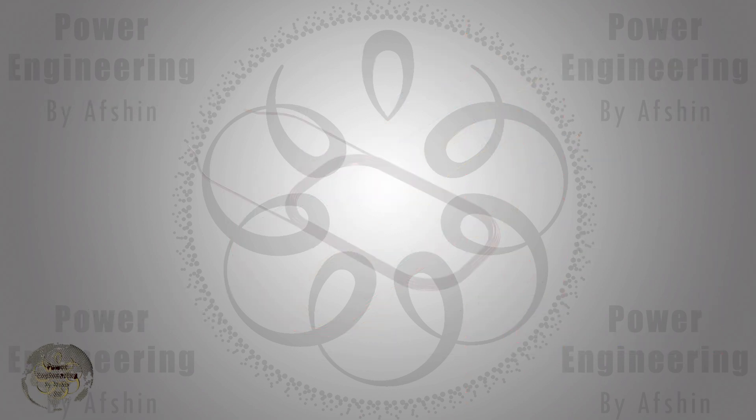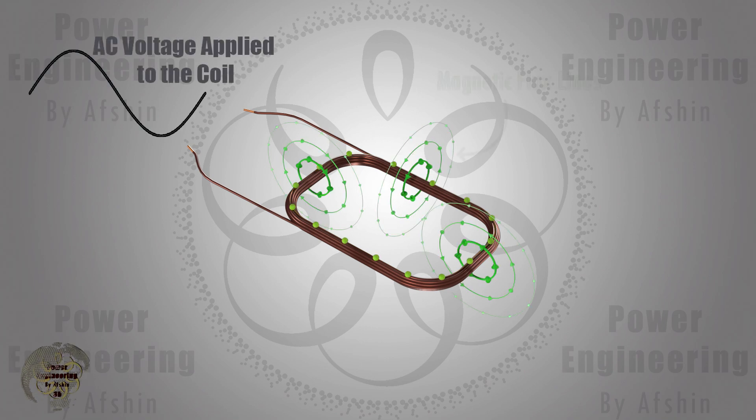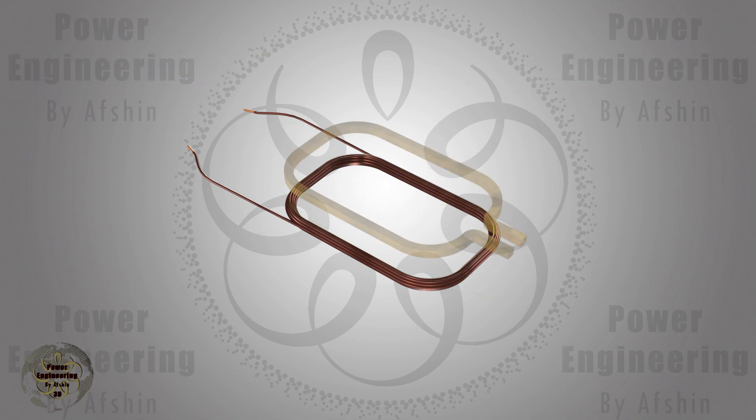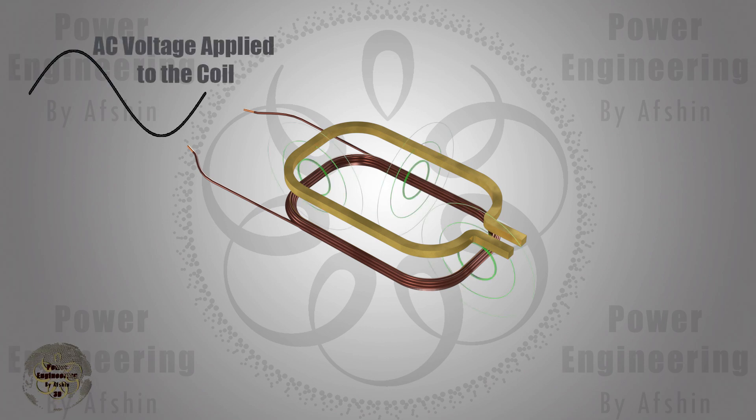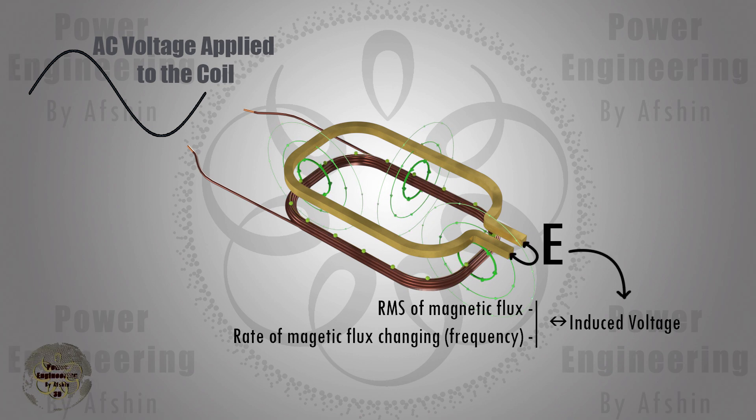With this in mind, consider a coil with an applied AC voltage. The resulting flux in the coil depends on the applied voltage and frequency. Now, consider a single turn coil with an open end placed near this coil. Due to the alternating nature of the voltage and magnetic flux, a voltage is induced in this loop. The induced voltage depends on the flux, its rate of change, and its frequency.